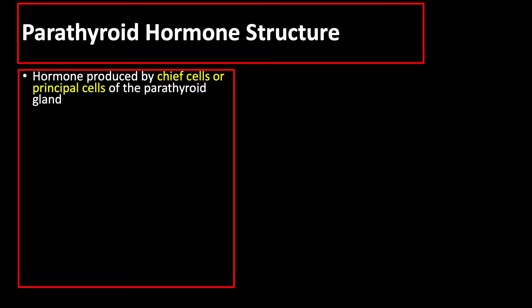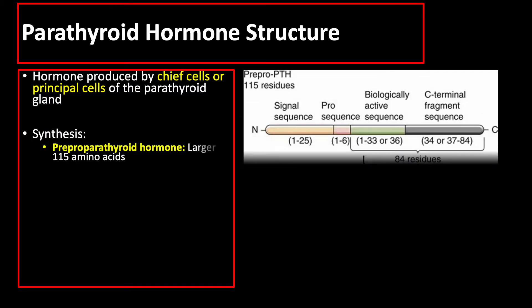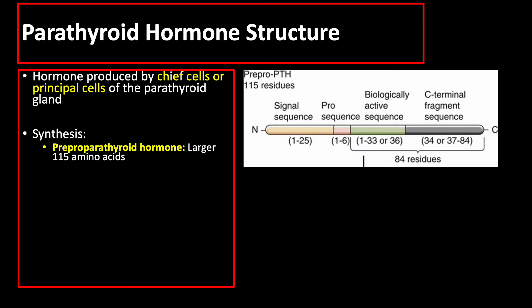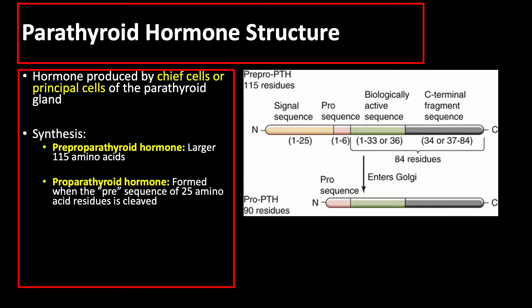Parathyroid hormone is produced by the chief cells, also known as principal cells of the parathyroid gland. Parathyroid hormone is initially synthesized as a larger molecule, pre-pro-parathyroid hormone, consisting of 115 amino acids. Then pro-parathyroid hormone is formed when the pre-sequence of 25 amino acid residues is proteolytically removed in the endoplasmic reticulum.